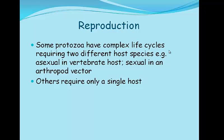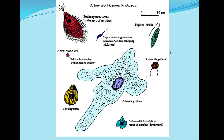Some protozoa possess very complex life cycles, with both sexual and asexual stages in different hosts, while others require only one host. Protozoa have been traditionally classified based on morphology and means of locomotion. Today we shall focus on locomotion, and here is a picture showing some of the well-known protozoan parasites that we may see in animals and humans.